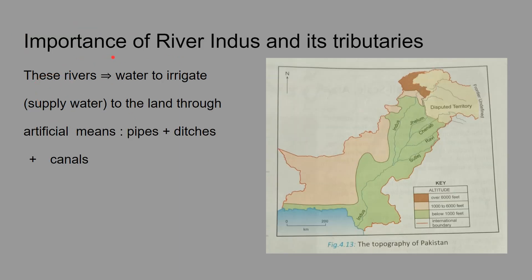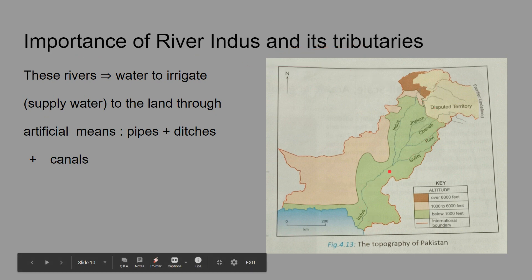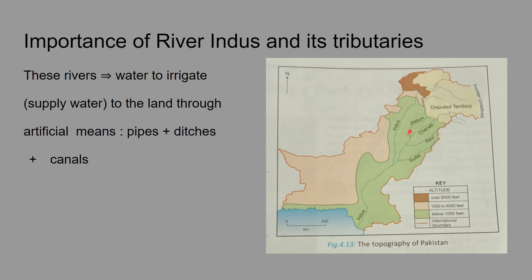Let's talk about the importance of River Indus and its tributaries. The tributaries of the Indus are Jhelum, Chenab, Ravi, and Sutlej. These rivers provide water to irrigate the land through artificial means such as pipes, ditches, and canals.